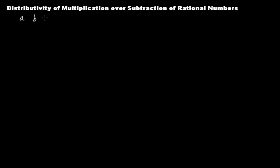If we have three rational numbers a, b and c, then distributivity of multiplication over subtraction of rational numbers says that a times (b minus c) is equal to a times b minus a times c.